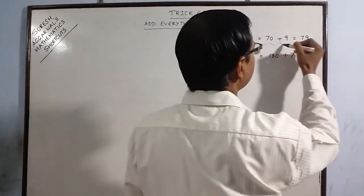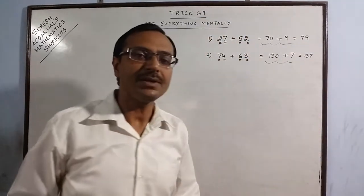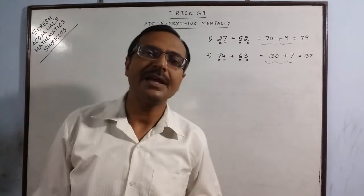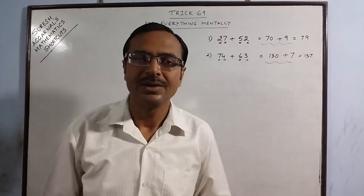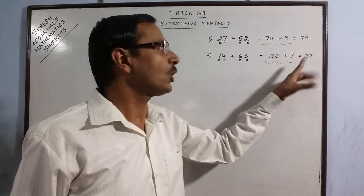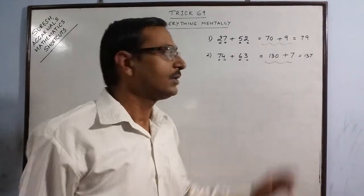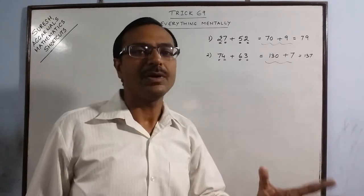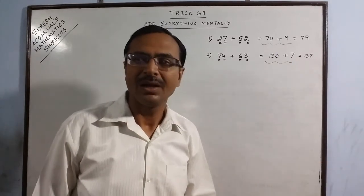This step which I am writing, the intermediate step. This is not to be done in writing. This takes place in mind. So you get a round figure here and a single digit here or a maximum double digit. A round figure can be added to a single digit or a double digit number very easily. More examples.